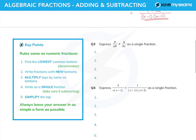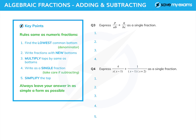Now we're going to do a slightly more complicated pair of questions. It's only complicated by the fact that the denominators have something in common. Life is much easier if we get the right lowest common denominator to start with. The lowest common denominator here is not AB times BC, but just ABC, because AB goes into ABC and BC goes into ABC. So it makes life a lot simpler if we choose the proper lowest common denominator.